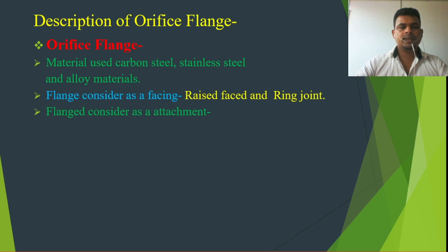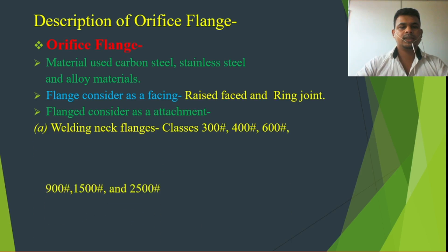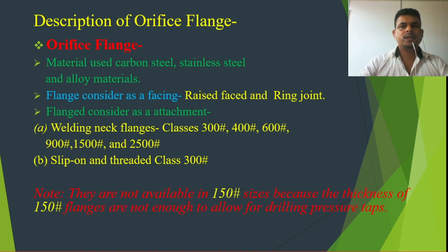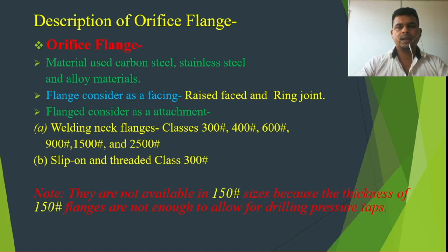If we consider flange attachment type, we can see weld neck flanges, slip-on flanges, and threaded flanges. So based on attachment, orifice flanges come as weld neck orifice flange, slip-on orifice flange, and threaded orifice flange. Slip-on and threaded orifice flanges are used for low pressure ratings. They are not available in Class 150 because the thickness of 150 flanges is not enough to allow for the drilling of pressure taps.